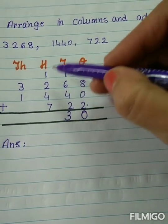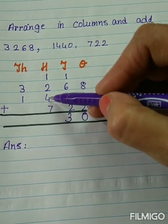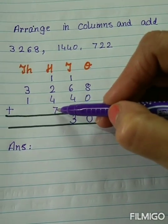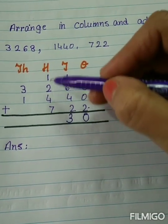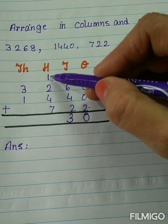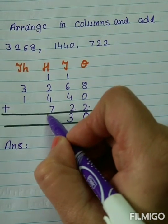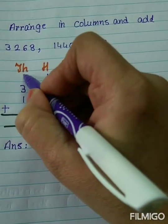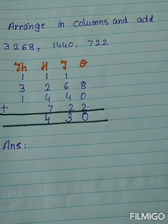Let's add the hundreds place now. 2 plus 4, 6. 6 plus 7, 13. Plus 1 carry over. Here we have 14. And again 1 carry over in the thousands place.